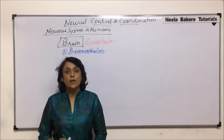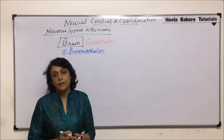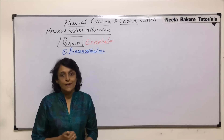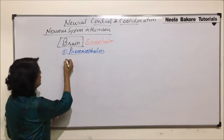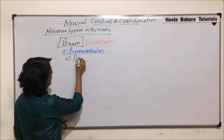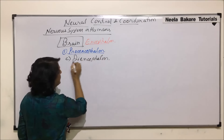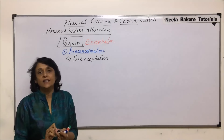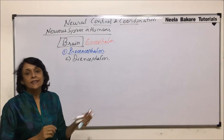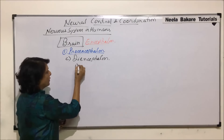In this video, we'll discuss the third part of prosencephalon, that is, forebrain. We have already talked about the first two parts, that is, olfactory lobes and cerebral hemispheres. The third part is known as diencephalon. This diencephalon is completely covered under cerebral hemispheres, and there are three main regions in case of diencephalon.